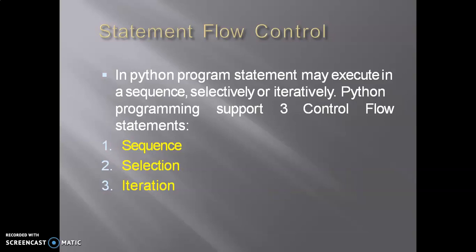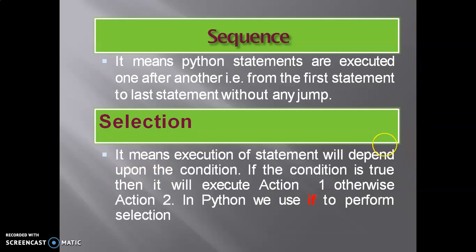Python programming supports three control flow statements: sequential, selection, or iteration. Sequential: every line in a program is executed. It means a top-down approach - every line in a program will be executed.